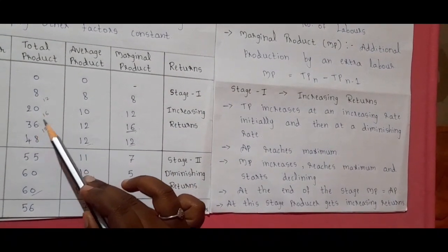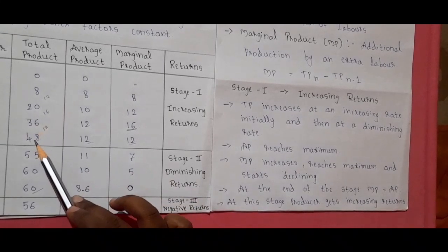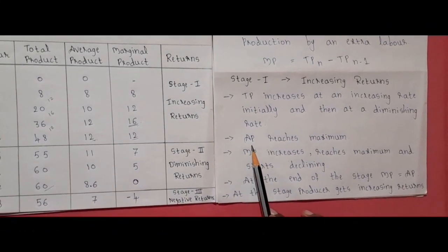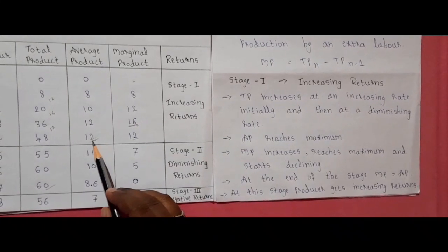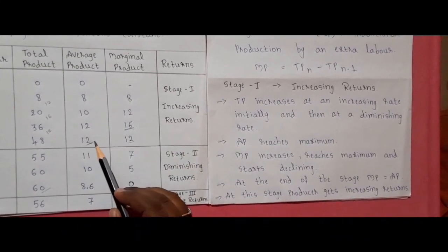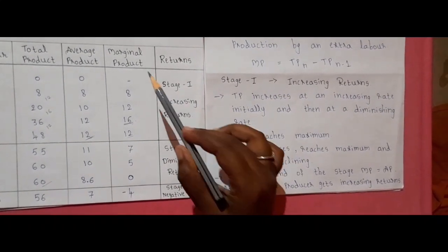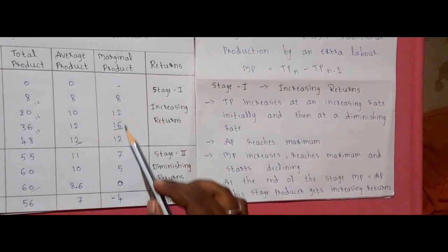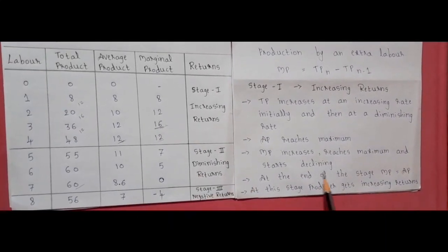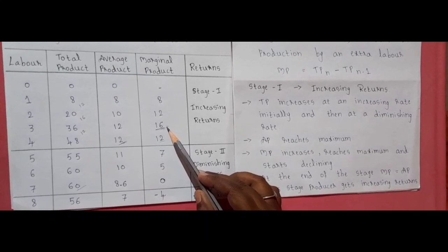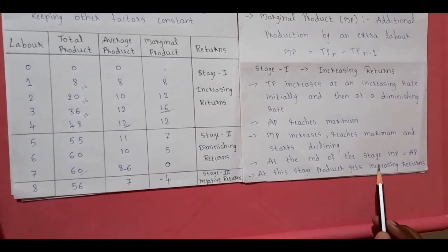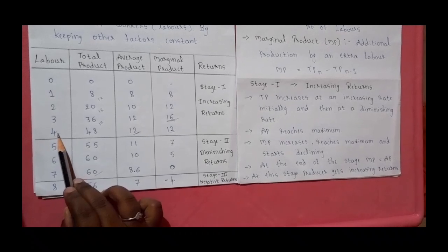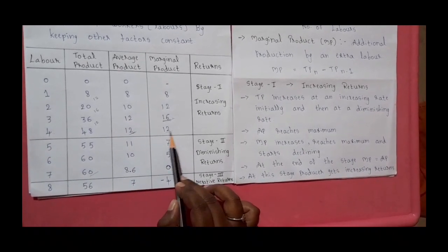From 20 to 36 units it increases by 16, and from 36 to 48 units it increases by only 12 — so it increases at a diminishing rate. Average product reaches maximum at 12 units, which is the highest. Marginal product increases and reaches maximum at 16 units, which is the highest, then starts declining. At the end of stage 1, at the fourth unit of labour, average product and marginal product are equal.